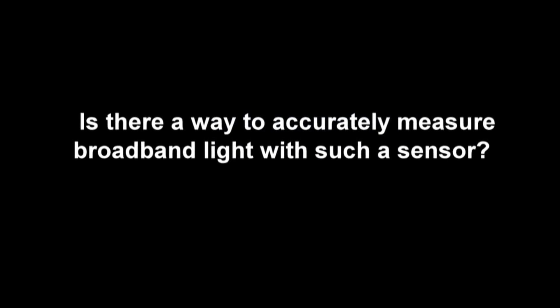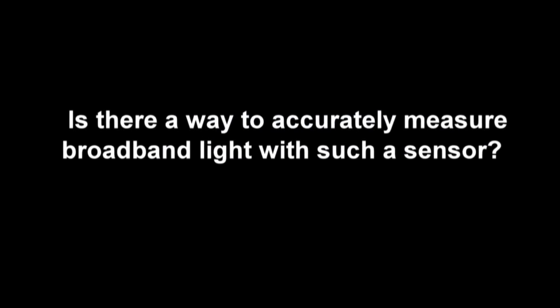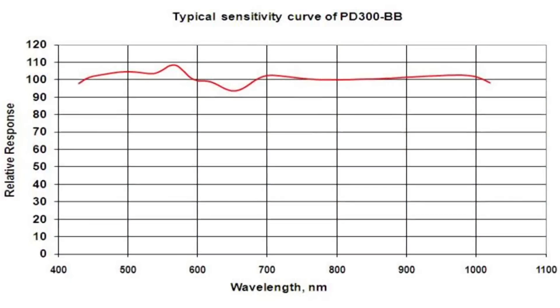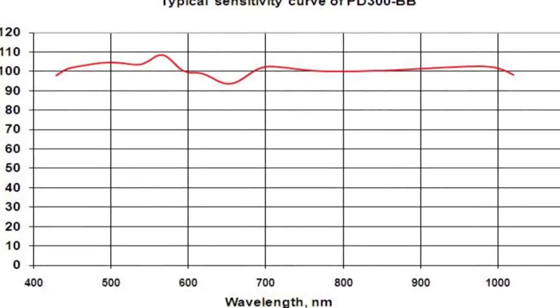Is there a way to accurately measure broadband light with such a sensor? The answer is yes. Ophir has a special photodiode sensor for broadband light sources that essentially flattens out the spectral sensitivity of the photodiode so that it'll be equally sensitive to all wavelengths and be suitable to measure broadband light. We do this by putting a special filter on top of the photodiode, integrated into the sensor, that transmits less where the photodiode is more sensitive and transmits more where the photodiode is less sensitive. That way it cancels out the variations in sensitivity. A sensitivity graph of this sensor, which we call the PD300BB, is shown here.